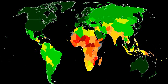The first index was launched in 1990, and the only year without a Human Development Report since 1990 was 2012. The latest index, covering 189 countries, was launched on 14 September 2018.